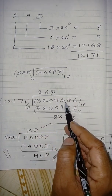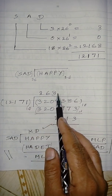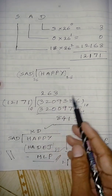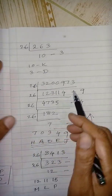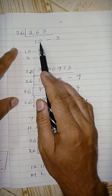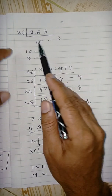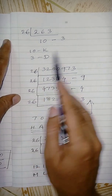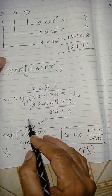So 3,209,386 divided — this is ordinary division. 263 times of this number gives 3,200,973, remainder 8,413. This number is SAD and this number is HAPPY. What about the quotient 263? This number we convert to base 26. We divide by 26: 10 is K, 3 is D — so KD. Then convert the remainder 3,200,973 in similar manner: divide by 26 repeatedly to get the base-26 representation.